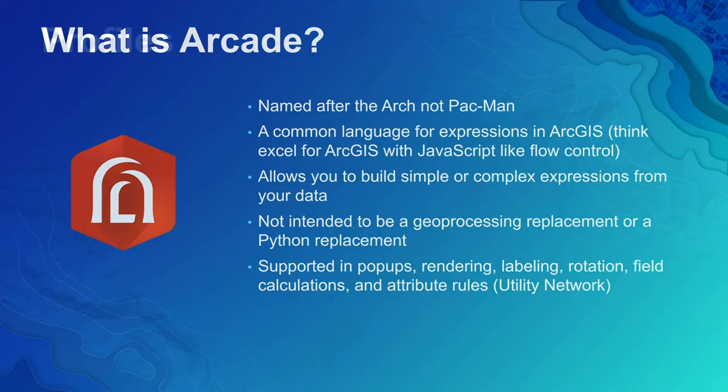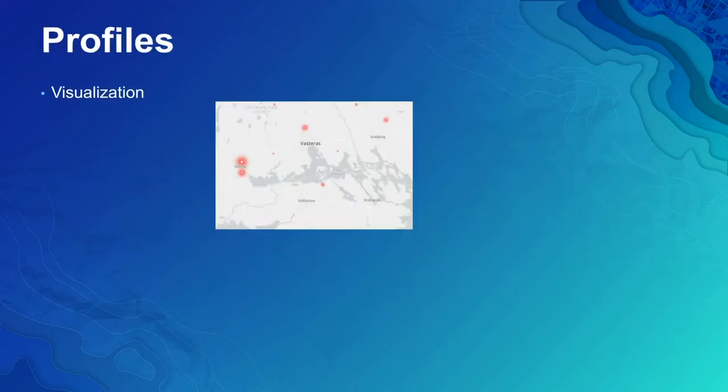In the visualization profile, Arcade allows you to calculate values for each feature in a layer at runtime. You can then use these values as the basis for a data-driven visualization — an alternative approach to creating visualizations based on a single field in the layer. Here, I've used an Arcade expression to add the total sales of Christmas trees and the total sales of Christmas ornaments, using the result to display total sales of our Christmas pop-up shops.